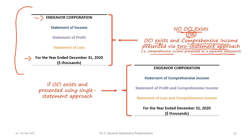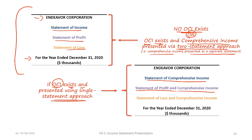Alternatively, if OCI exists and we are presenting using a single-statement approach — including net income and comprehensive income on the same statement — we can call it a 'Statement of Comprehensive Income,' a 'Statement of Profit and Comprehensive Income,' or a 'Statement of Loss and Comprehensive Income.' Our example has OCI existing and we will present a single-statement approach, so we will use 'Statement of Comprehensive Income.'